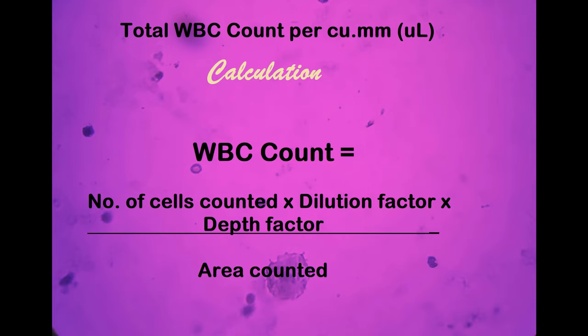Or if you want to do the math, you can use this formula to come up with the number of WBCs in one cubic millimeter of the blood sample. WBC count equals number of cells counted into dilution factor into depth factor divided by area counted.